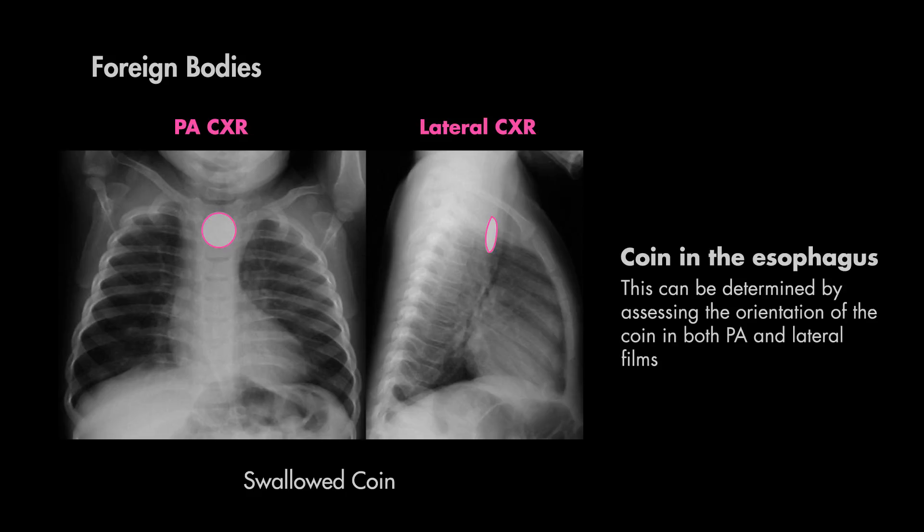If you didn't have the lateral film and only the PA film, you might have assumed that the circular object was perfectly round.